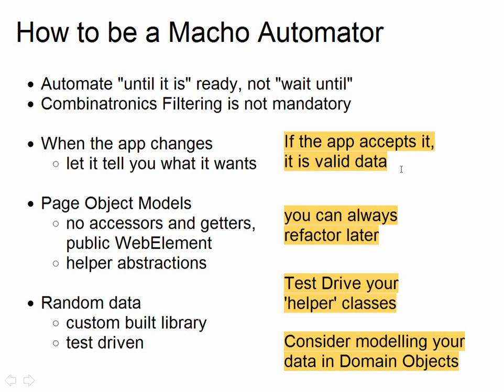I used different abstractions on the page object model to help simplify the tests, but we can refactor later — I don't have to do everything right now. For the helper classes and the random data, I use test-driven development because I don't want them to impact what I'm doing. TDD is a great way to knock out simple things really quickly as part of your test framework. I always try to do TDD for my helper classes, not necessarily for the page objects, but certainly all the helper classes.